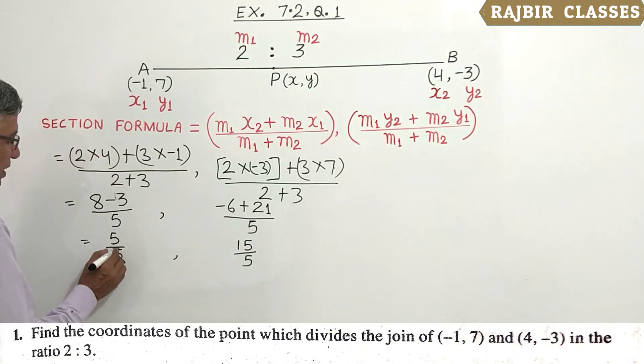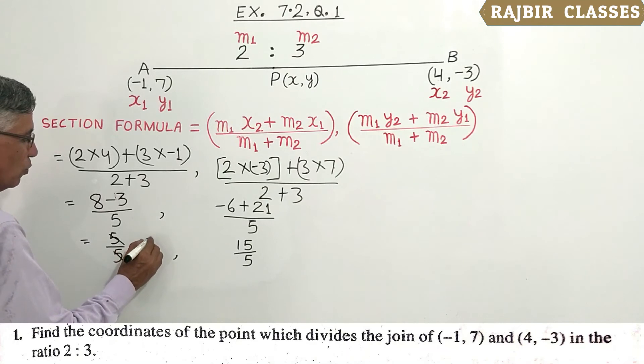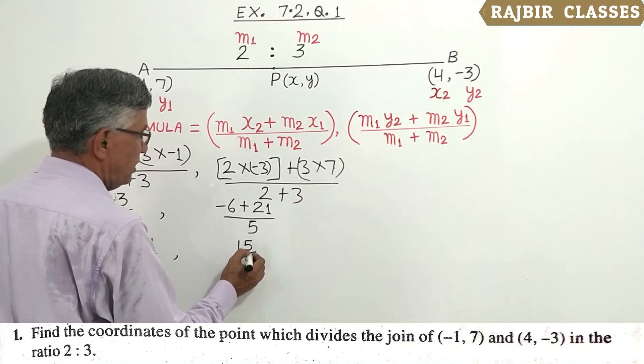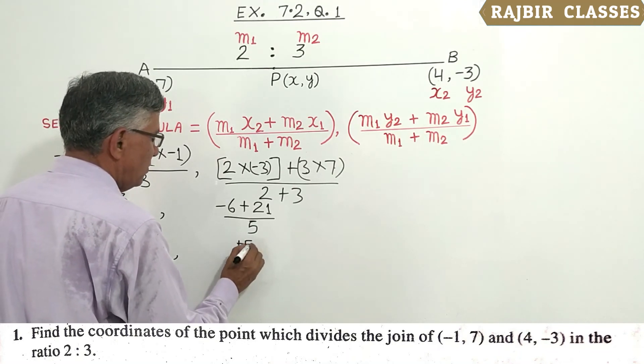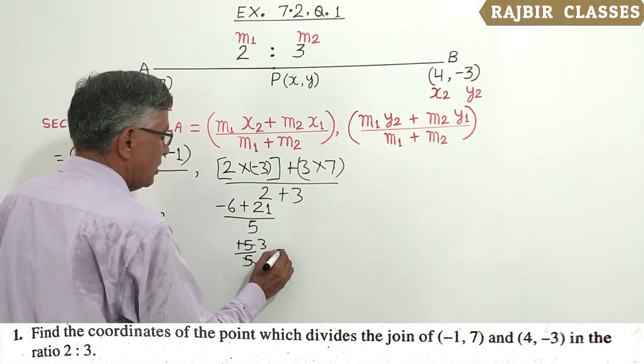5 upon 5 equals 1, which is the x-coordinate. 15 upon 5 equals 3, which is the y-coordinate.